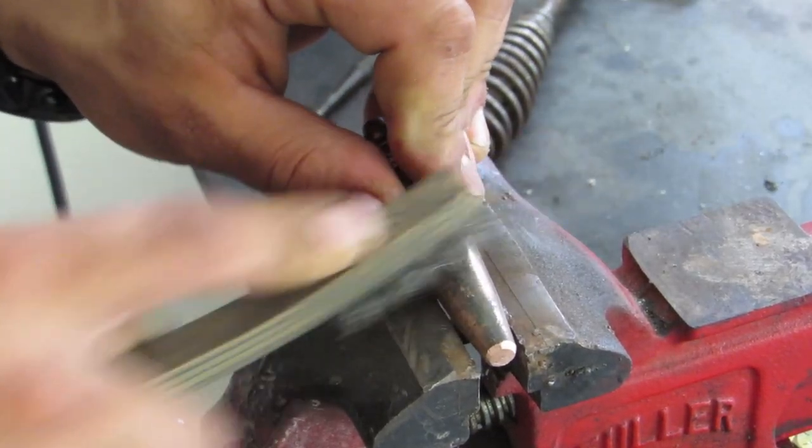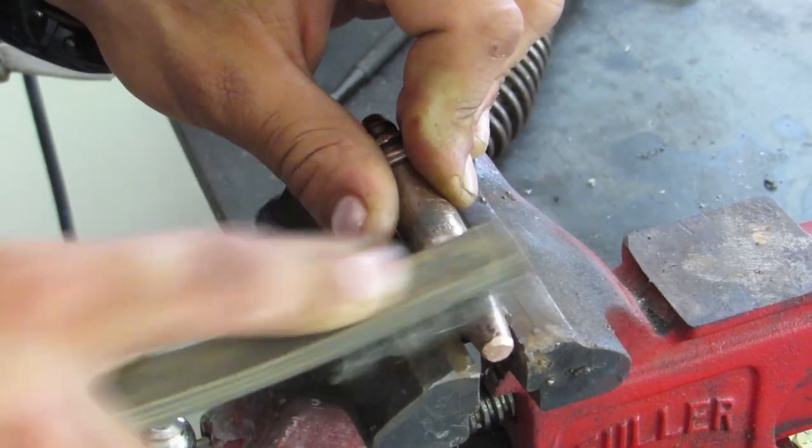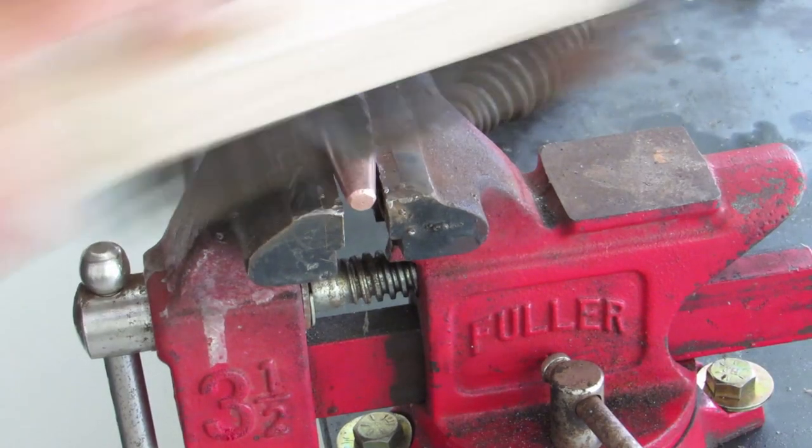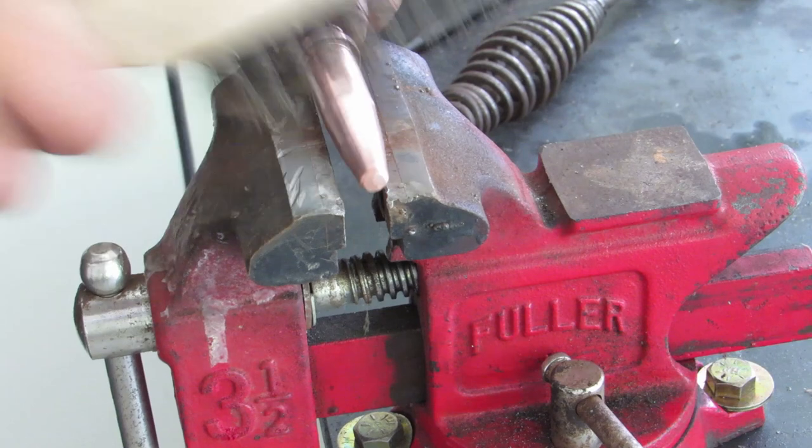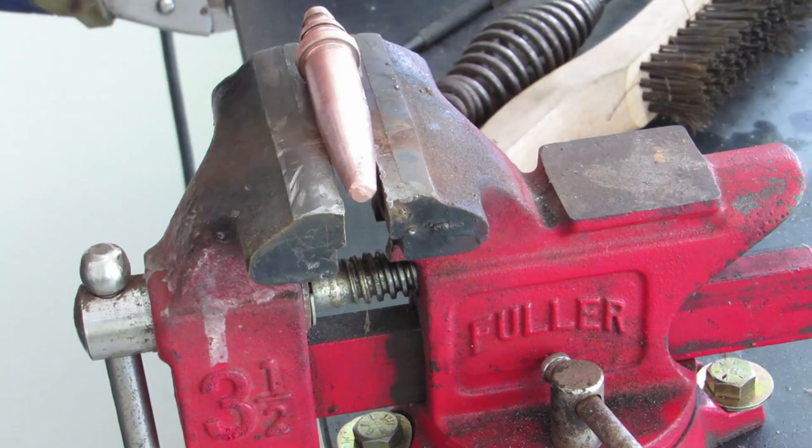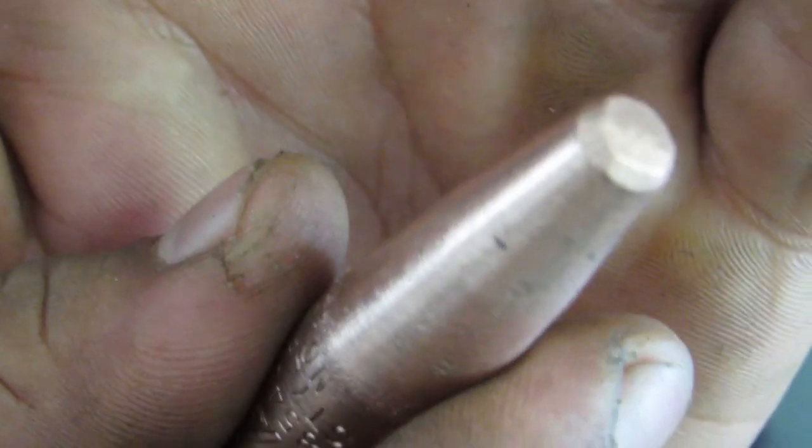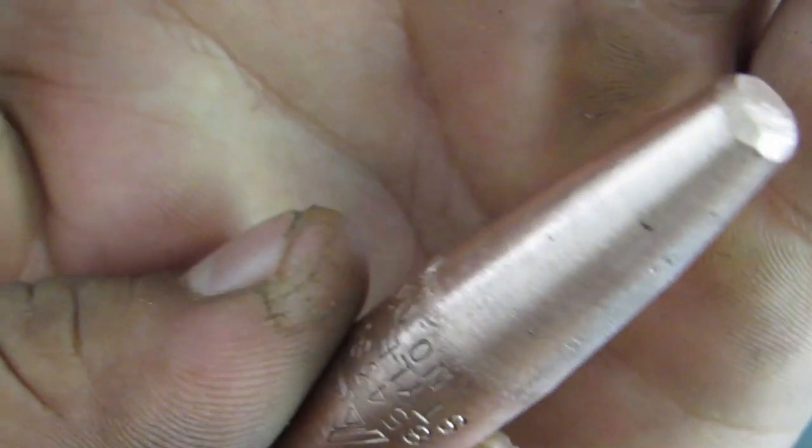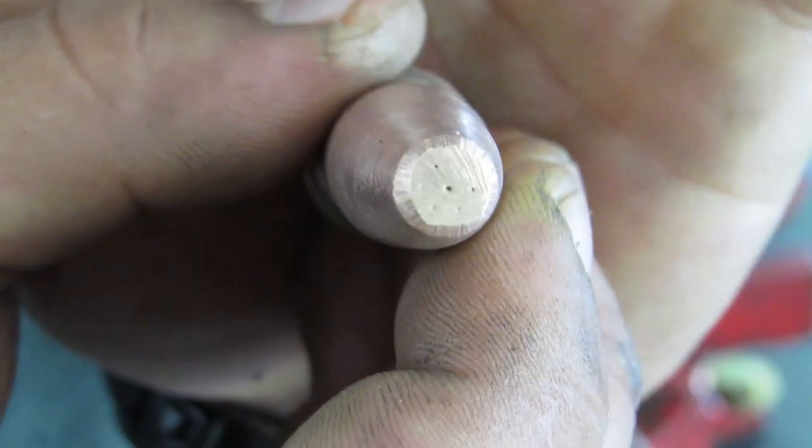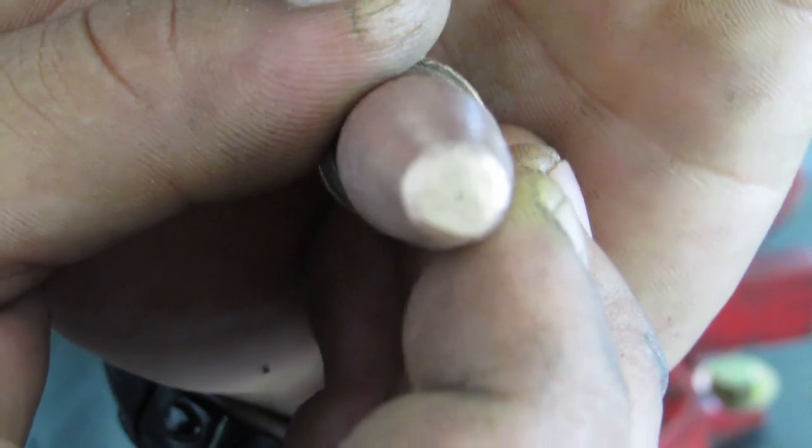So I'm just polishing my knob here just to make it look nicer in the end. Is that even the same tip? Yes it is, same old tip. Nice and shined up. We're gonna fix those smeared over orifices now.